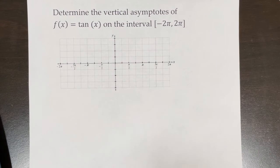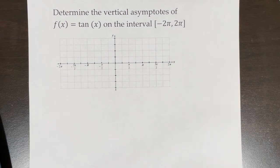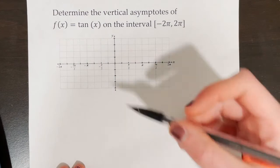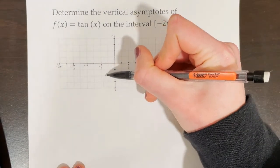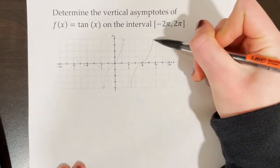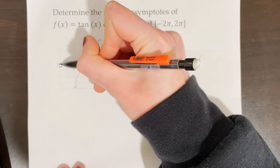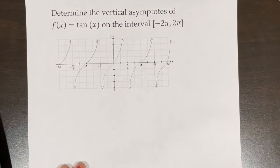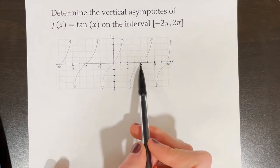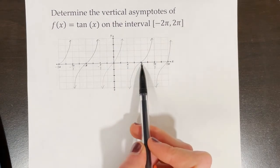Determine the vertical asymptotes of f(x) = tan(x) on the interval from −2π to 2π. I'll do a rough sketch of the tangent function. To sketch it, I evaluated where tan(x) = 0: tan(π) = 0, tan(0) = 0, tan(2π) = 0. I plotted those points and filled in the rest using knowledge of the unit circle.